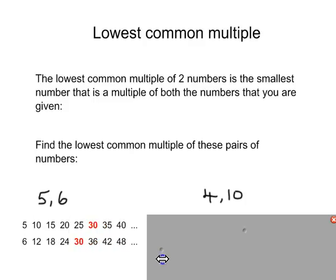See, I've written out the 5 times table on the first line, 6 times table on the second line. And as I look through both lists, the first number in both lists is 30. I've highlighted it in bold red text for you.